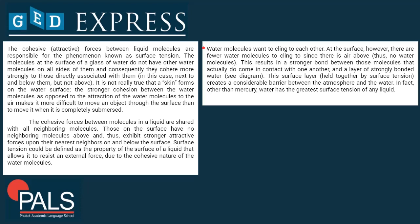At the surface, however, there are fewer water molecules to cling to since there is air above — thus no water molecules. This results in a stronger bond between those molecules that actually do come in contact with one another, and a layer of strongly bonded water forms. This surface layer held together by surface tension creates a considerable barrier between the atmosphere and the water. In fact, other than mercury, water has the greatest surface tension of any liquid.